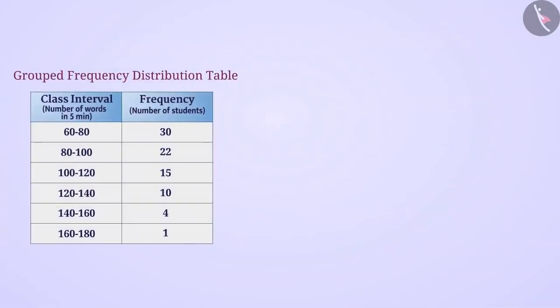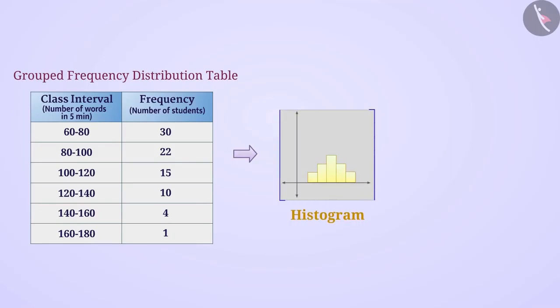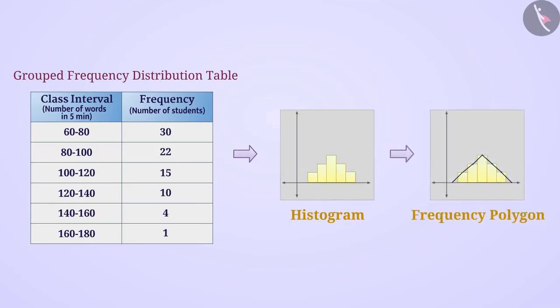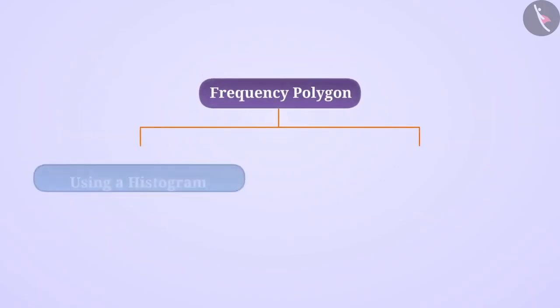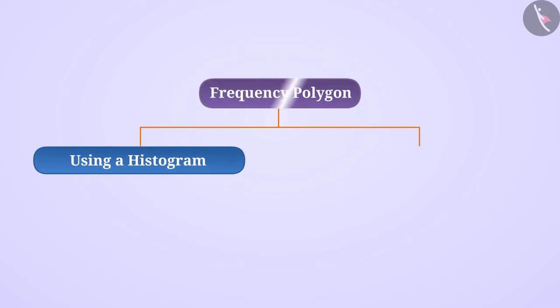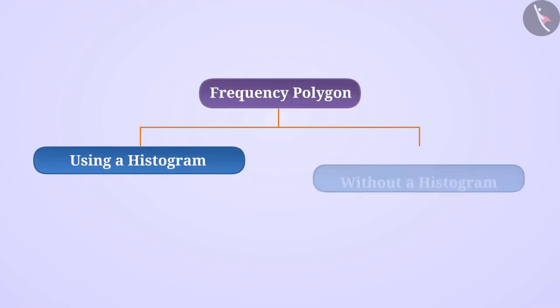In the previous video, we learnt to represent classified data as a histogram. Like the histogram, frequency polygon is also a way of representing classified data graphically. In this video, we will look at two ways to draw a frequency polygon: using a histogram to draw a frequency polygon, and drawing a frequency polygon without a histogram.